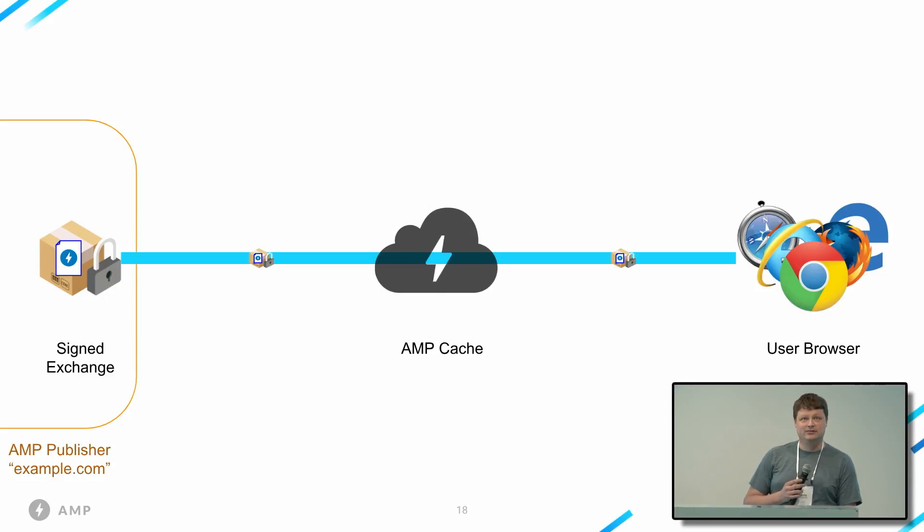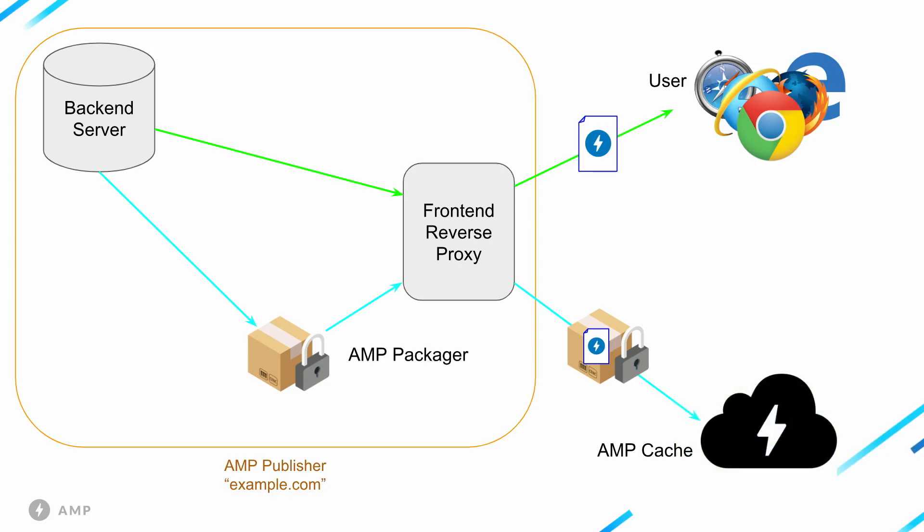The AMP cache cannot apply the optimizations it does today, but we still want them — those optimizations make pages load faster and help with security. So what we're going to do is have publishers produce those optimizations on their side before signing the documents. We're building a web server called the AMP Packager — available right now on GitHub under the AMP project — which anyone can run to apply AMP cache optimizations and serve signed exchanges on their own URL. Even still, running this extra software on your infrastructure is clearly hard for many publishers to do.